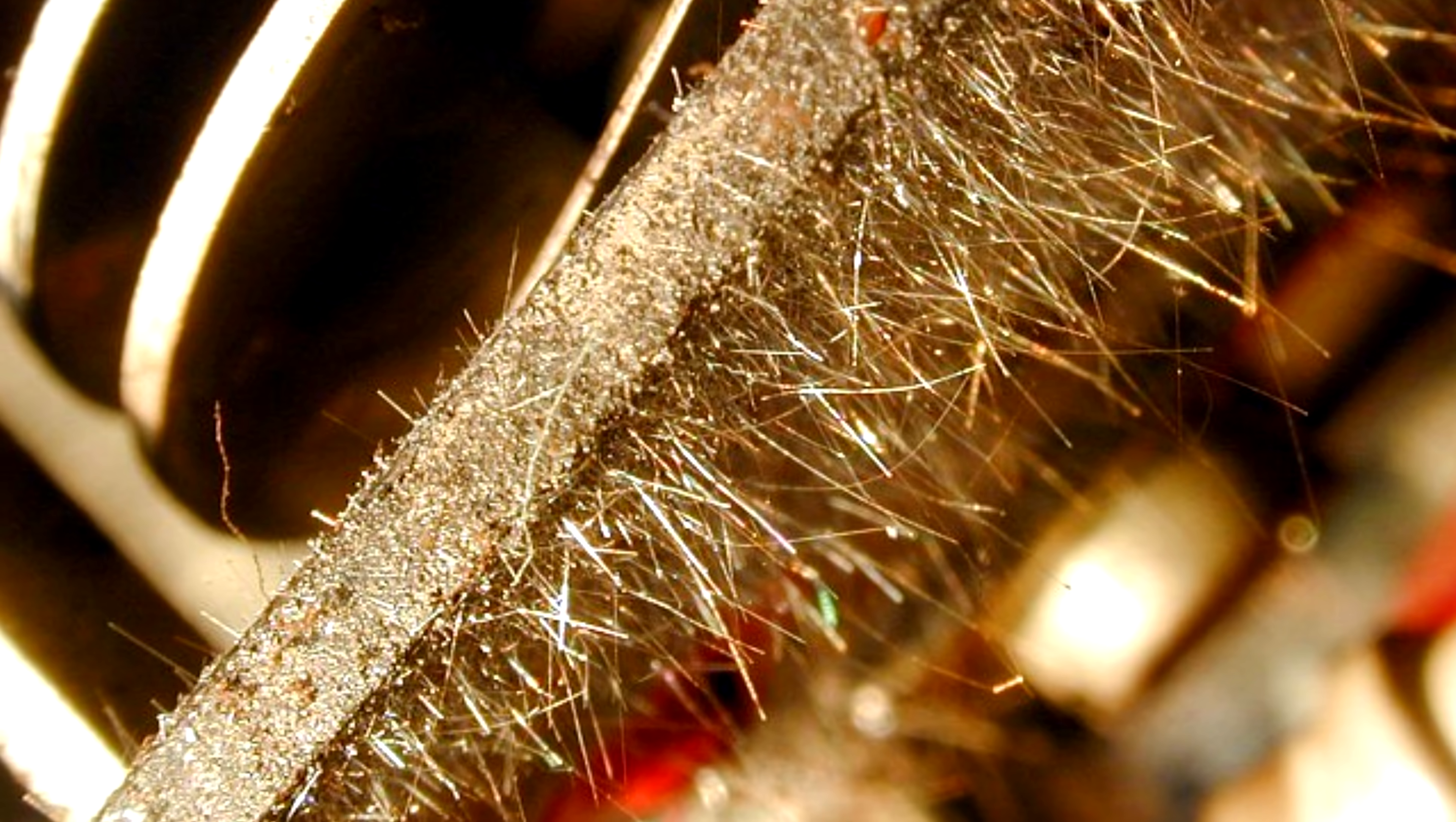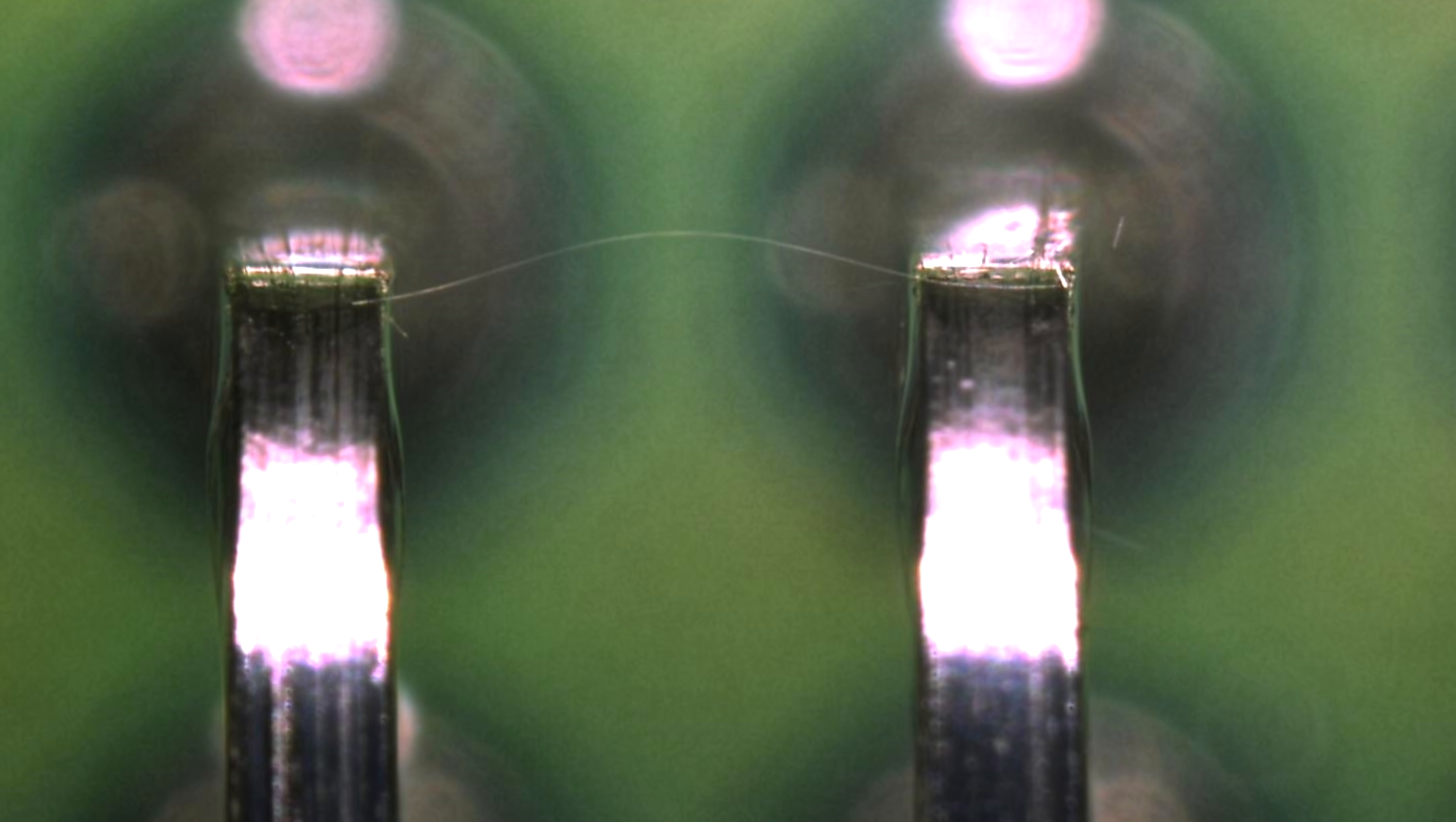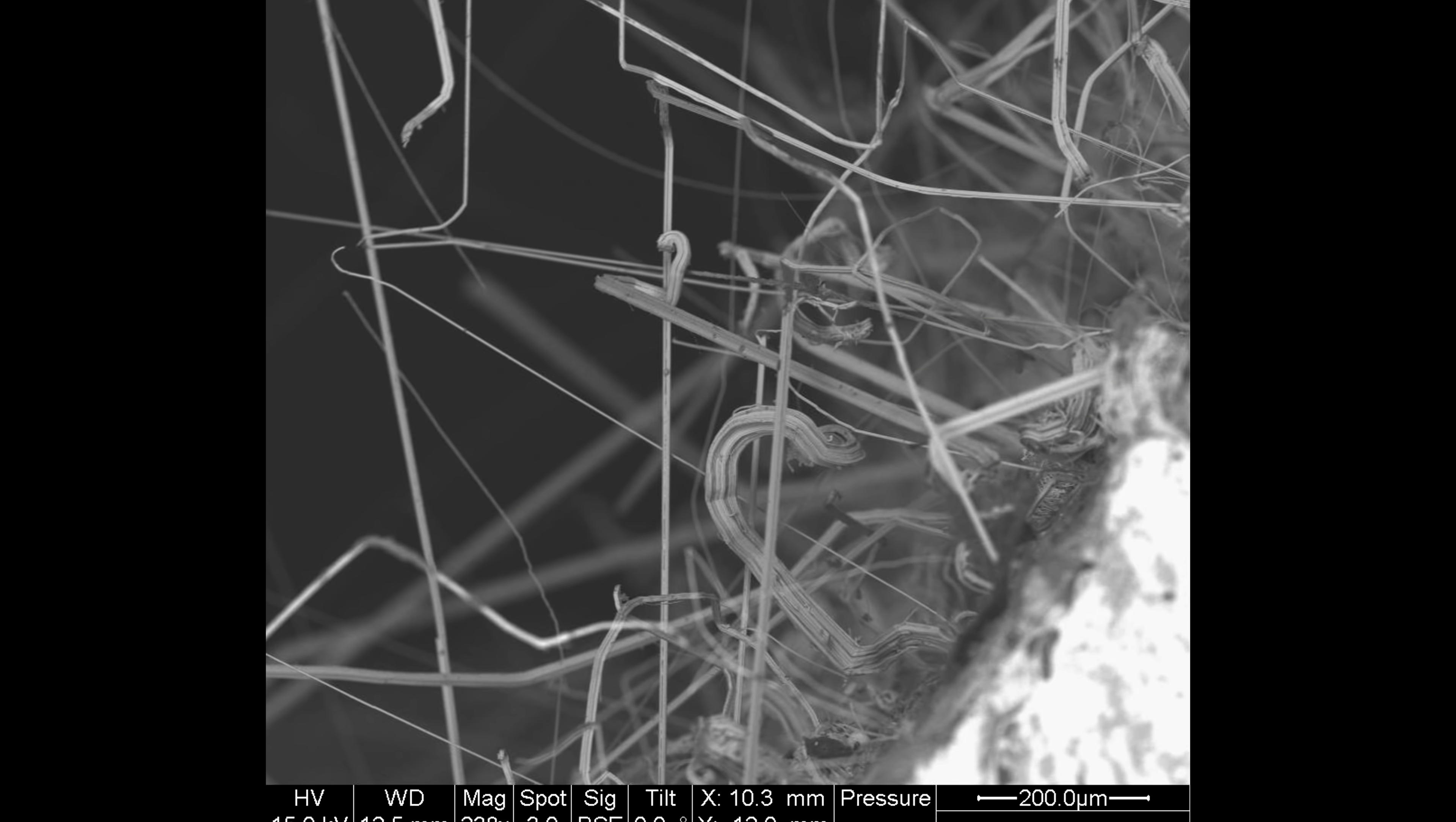These tin whiskers can grow to a decent size, resulting in a short circuit and equipment failure. This effect has already led to a number of failures in electronics, including a complete breakdown of orbiting satellites.